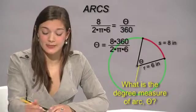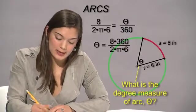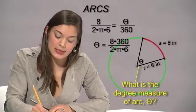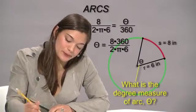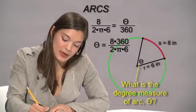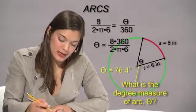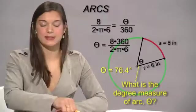So now we cross multiply again. Same thing, s times 360 equals theta times 2 pi r. Now we divide by 2 pi r to get theta by itself. And we figure out that theta equals about 76 degrees.